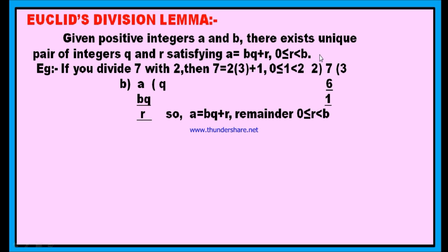Dividend is equal to divisor into quotient plus remainder. Therefore, you can write 7 as 2 into 3 plus 1. The remainder should always be either 0 or less than the divisor. Here, if we divide this number with 2, the remainder should not be 2; it should be less than 2. Since we are dividing 7 with 2, the remainder 1 is greater than or equal to 0, but less than the divisor 2. This is Euclid's division lemma.